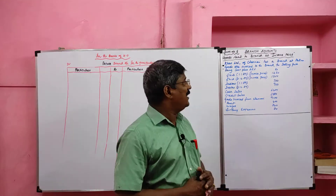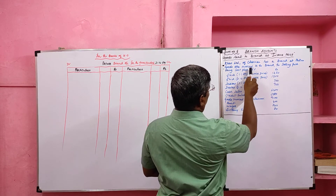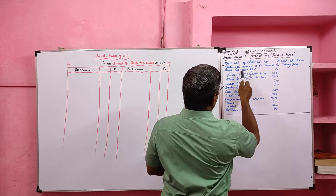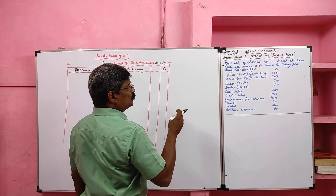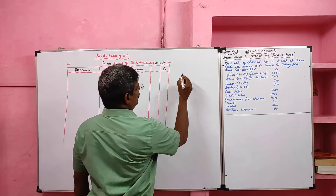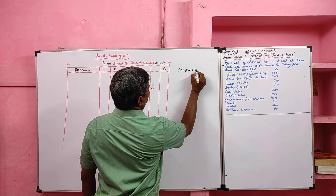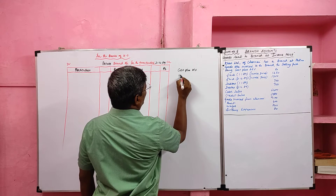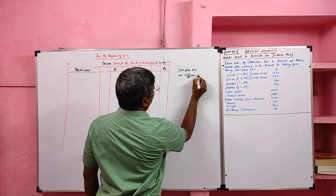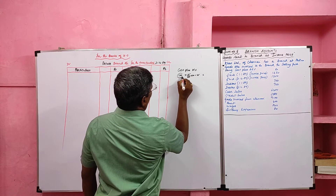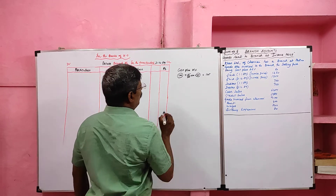Look at the problem: Corn Limited of Chennai has a branch at Pantha. Goods are invoiced to the branch at the selling price, being cost plus 25 percent. So the head office sends goods to branch at cost plus 25 percent. Cost is 100, plus profit 25 percent of cost, that is 25. So our invoice price is cost plus profit, which is 125.